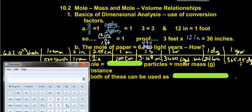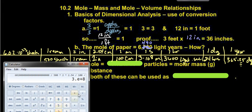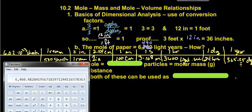So we have 6.02 × 10²³ divided by 500, because we divide by everything on the bottom and multiply by everything on the top. Times 2, times 2.54, divided by 100, divided by 3 × 10⁸, then divide by 3,600, then divide by 24, then divide by 365.25. And voilà — 6,460, not 6,490. But this right here is how many light years one mole of sheets of paper would be.